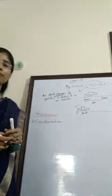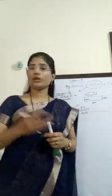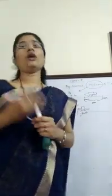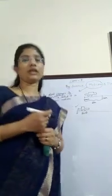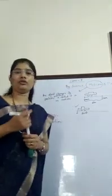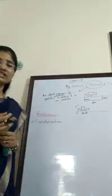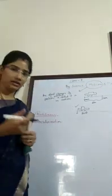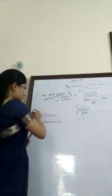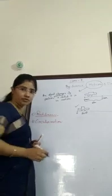There are five types: rectilinear motion, circular motion, periodic motion, uniform motion, and non-uniform motion. We will discuss them one by one.